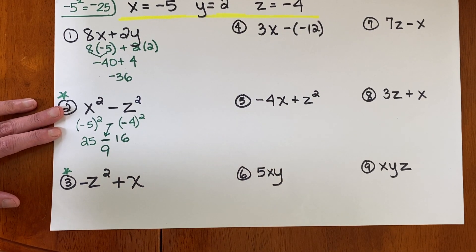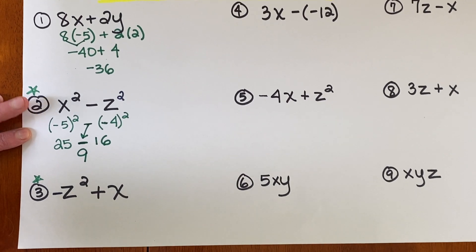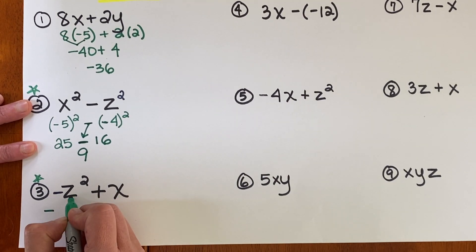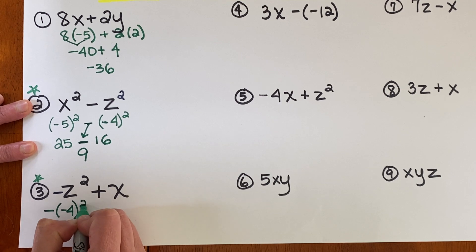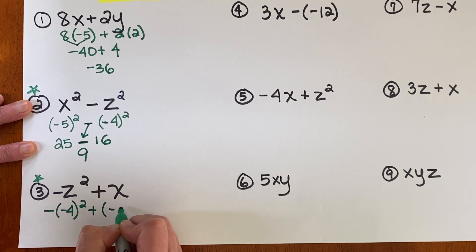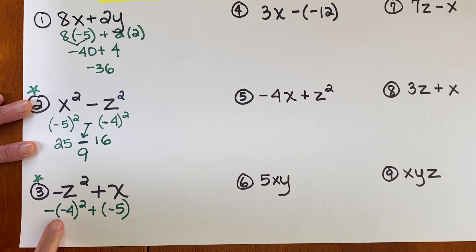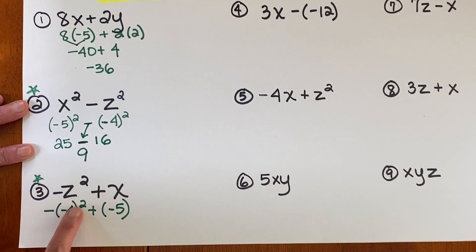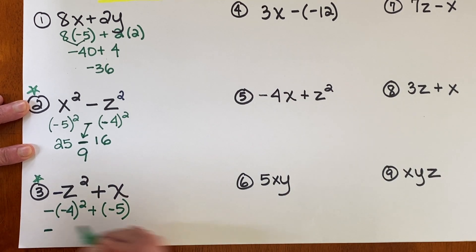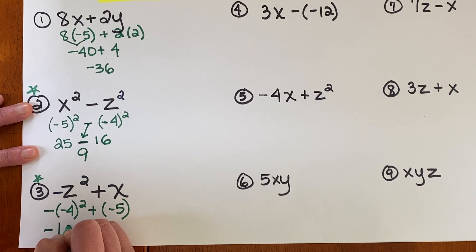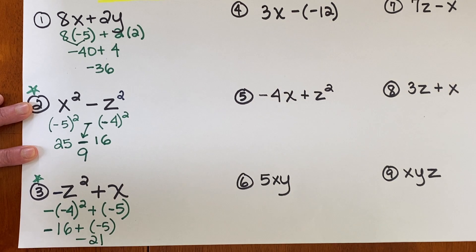Number 3. Okay. Negative Z was a negative 4. Plus X is negative 5. Again, don't make those two a positive. First you do your squaring, order of operations. You copy that negative sign because there's nothing to do with it. Negative 4 times negative 4 is positive 16 combined with my debt of negative 5 is negative 21.